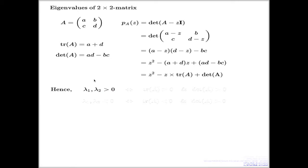If lambda 1, lambda 2, your eigenvalues, they will be both positive if and only if both trace and determinant are positive. It's an if and only if result.